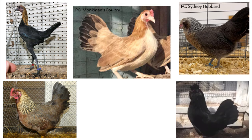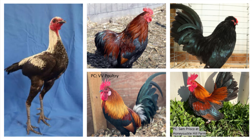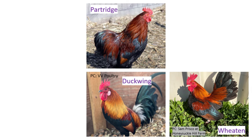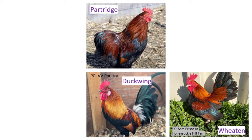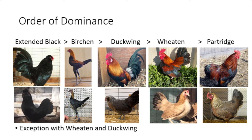Each E-Allele expresses very differently on females, while in males, three E-Alleles — Duckwing, Wheaten, and Partridge — look nearly identical. The general accepted order of dominance starts with Extended Black, followed by Birchen, then Duckwing, Wheaten, and lastly Partridge, although there is an exception with Wheaten and Duckwing that I will cover later in the video.